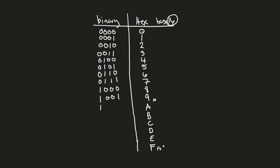Continuing through the letters: A is 1010, B is 1011. For C, we've filled those two slots so it becomes 1100. D is 1101, E is 1110, and finally F is 1111. We now have all of our binary representations mapped to hex.